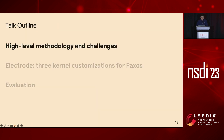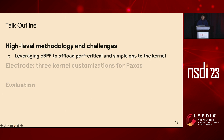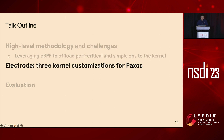Just a quick summary: in the first half of the talk, I discussed our methodology of reducing kernel overhead — leveraging eBPF to safely customize the existing kernel at runtime. To make the right division of labor, we offload performance-critical and simple operations to the kernel. Next, I will talk about how we realized this offload for Paxos.